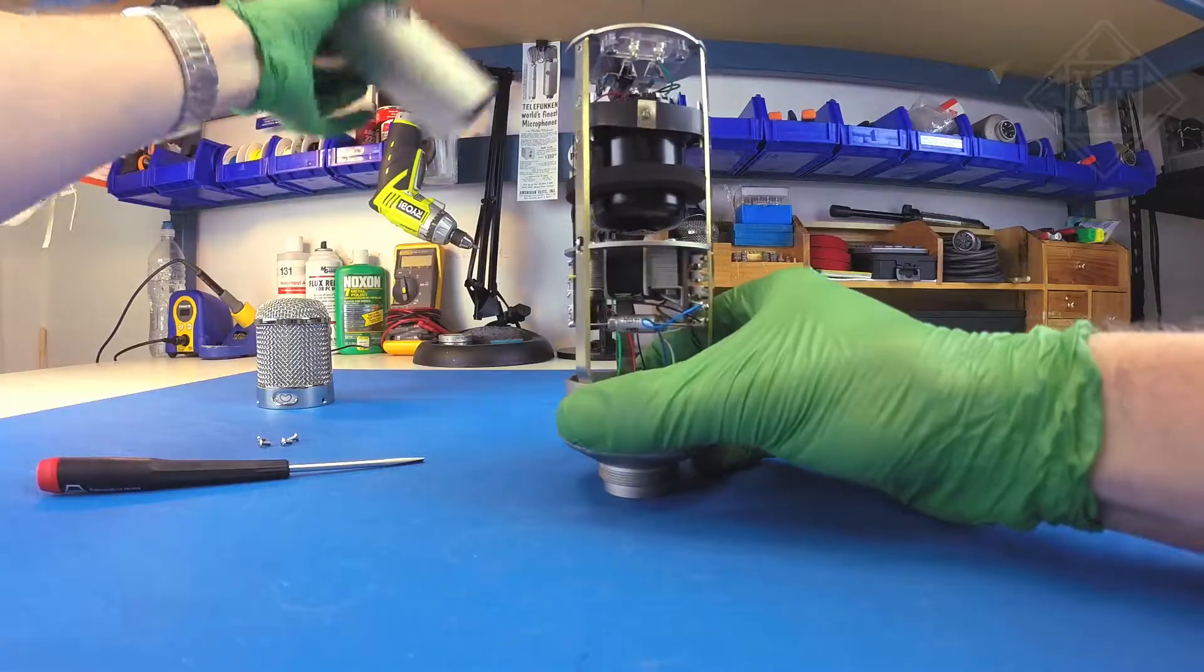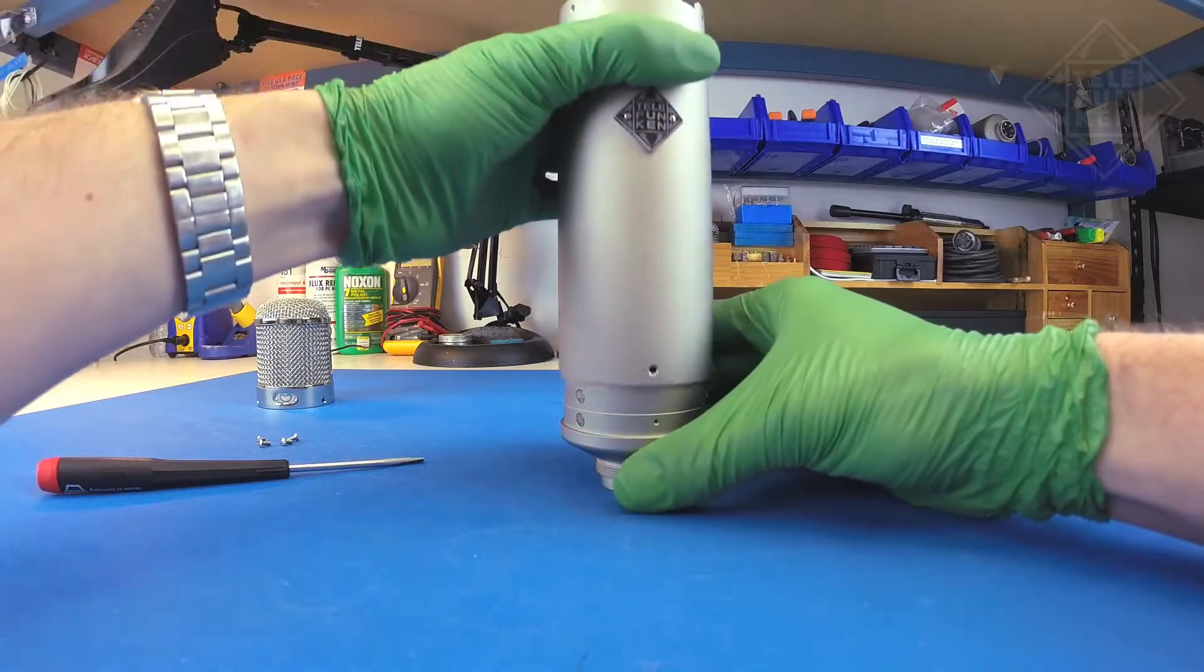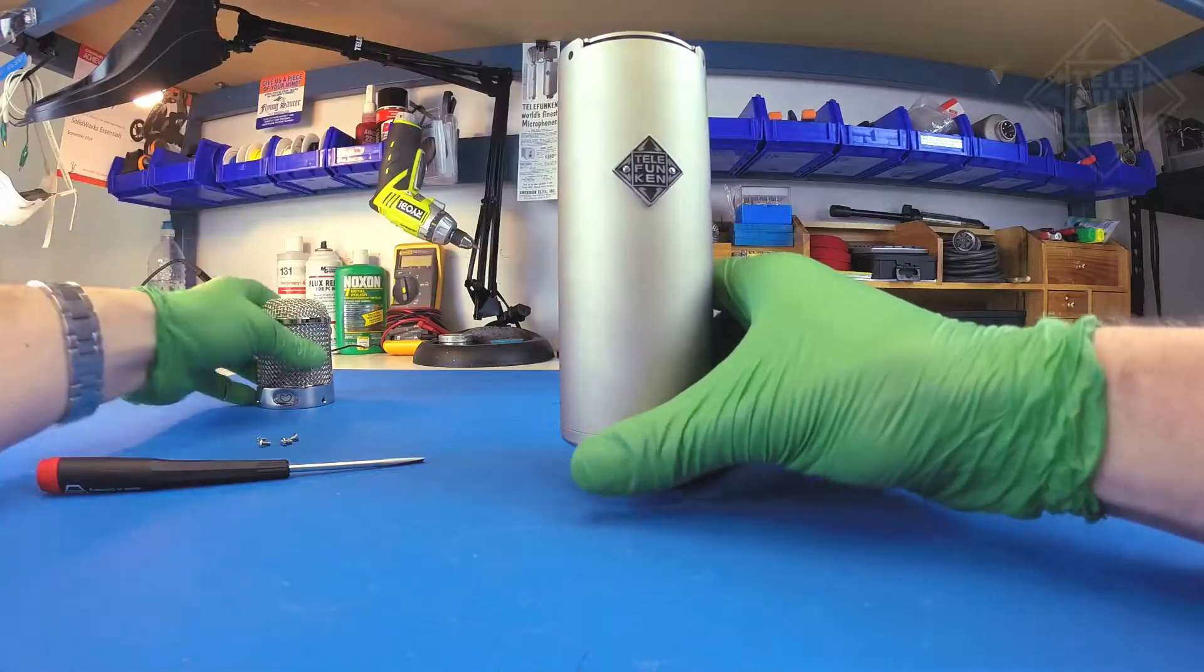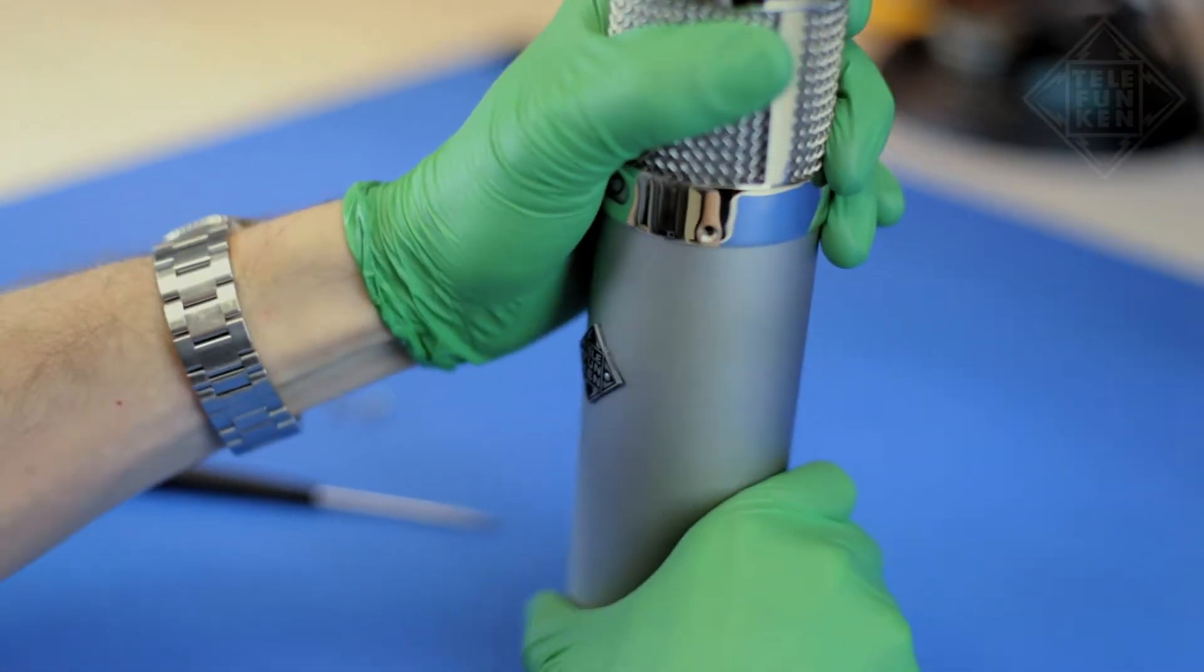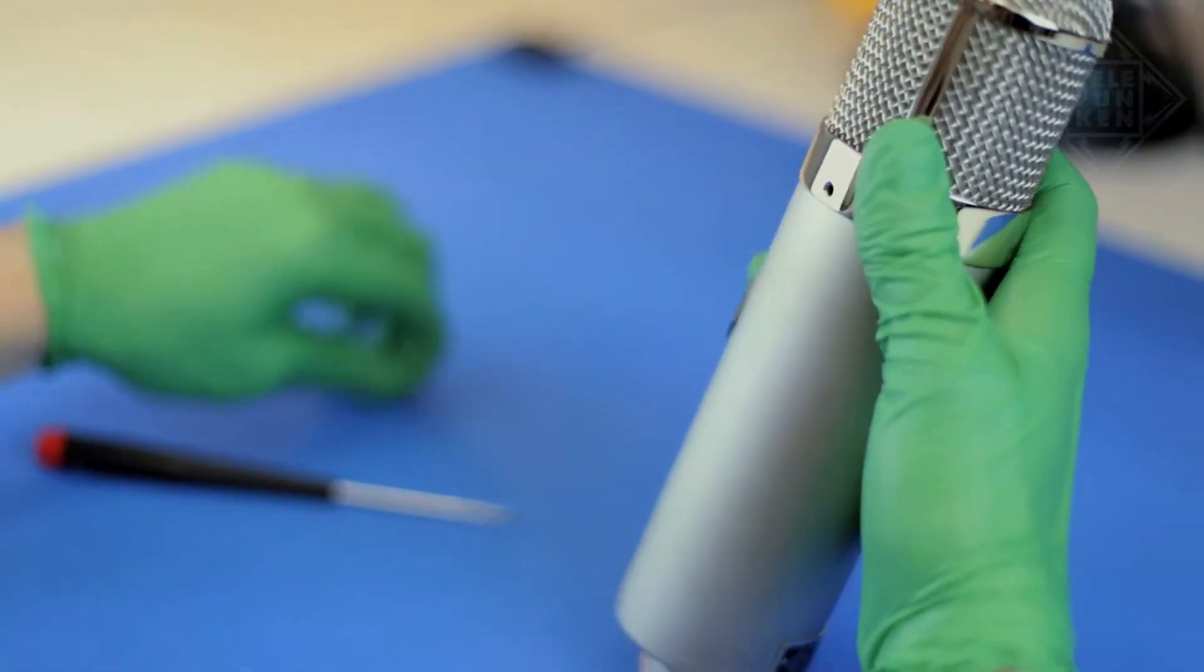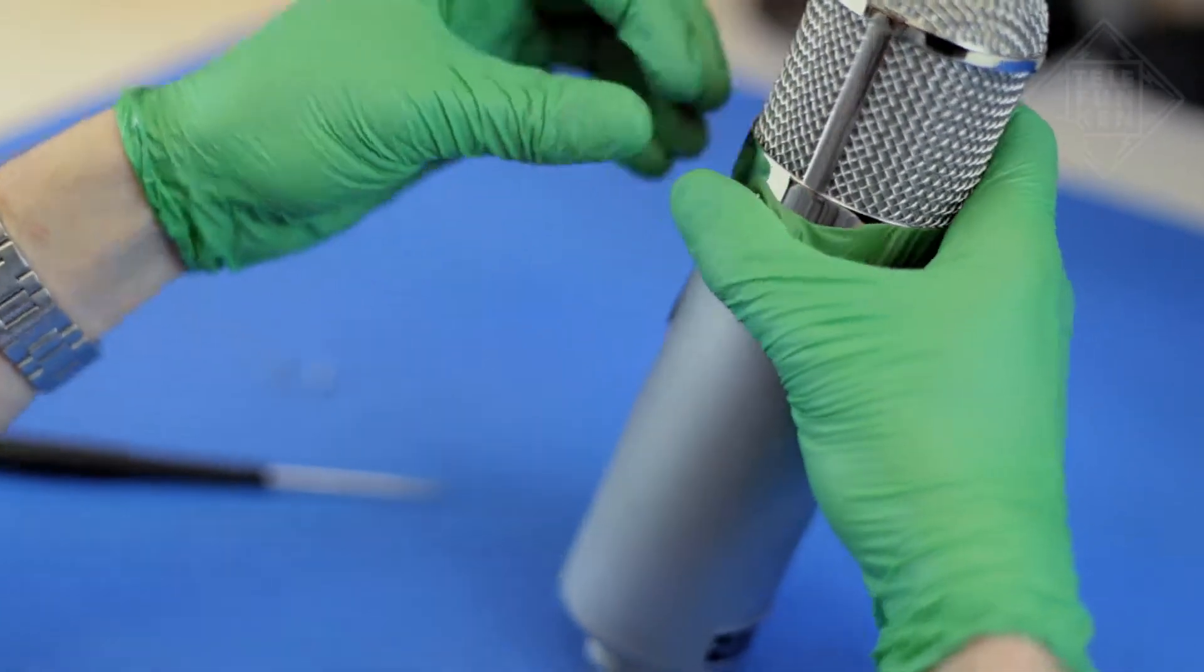Slide the body tube over the amplifier, lining up the bottom screw hole with the bottom bell. Put the head assembly back on, lining up the contacts on the top plate. Insert and tighten the three head grille screws.